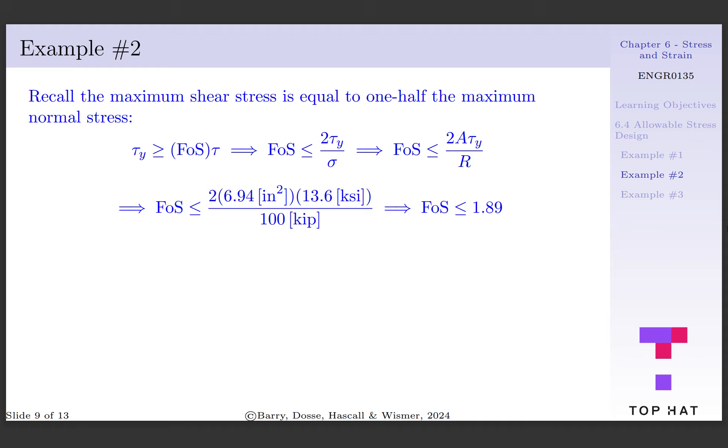Substituting in our values, we have our factor of safety less than or equal to 2 times 6.94 inches squared times 13.6 ksi per 100 kip, which gives us a factor of safety less than or equal to 1.89.